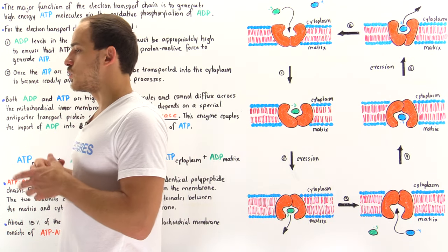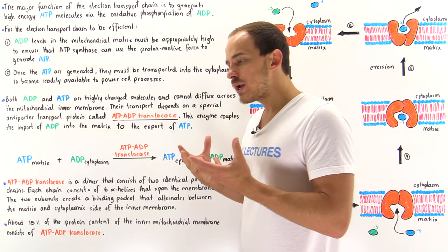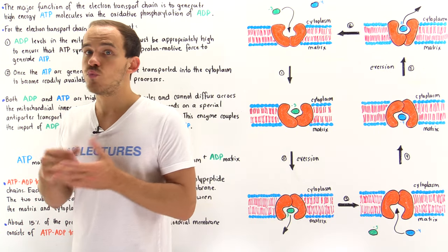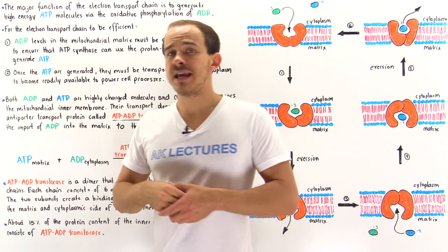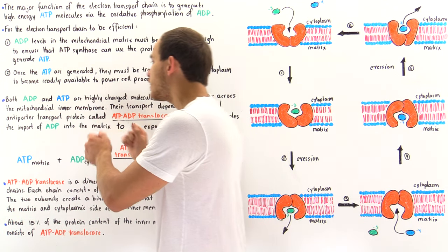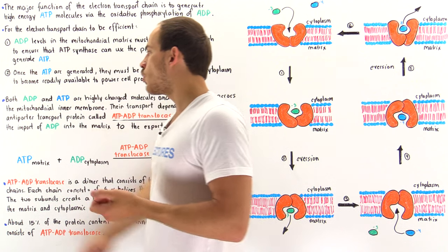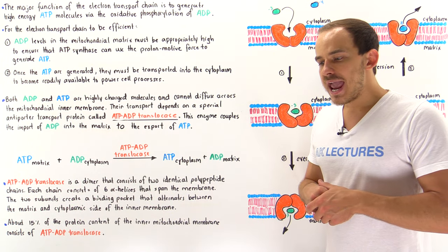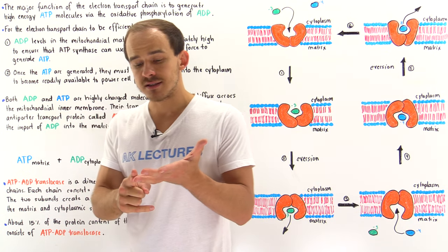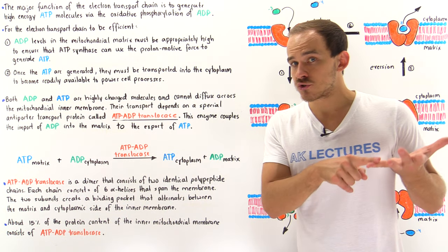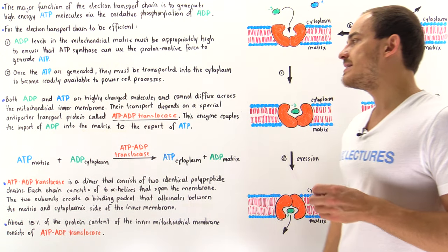The problem with transporting ADP and ATP molecules across the inner mitochondrial membrane is that the membrane is impermeable to these two molecules. ADP contains a charge of negative 3 while ATP contains a charge of negative 4, so both are highly charged species and cannot simply diffuse across the inner membrane. Their movement depends on the existence of a special antiporter transport system.